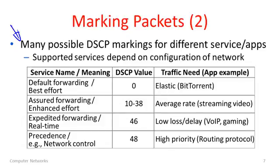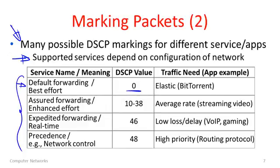In the differentiated services architecture, there are many possible DSCP markings that could be put on a packet to request a different kind of service. It really depends on what the network operator is going to provide. Differentiated services is really a toolkit, and your ISP will decide what handful of services they'll support and exactly what they will mean. One kind of differentiated service has a code point of zero — that's the default forwarding service, which is simply best effort. This is appropriate for elastic traffic, traffic that can be spread out over whatever time is available. BitTorrent is a good example — it's a bulk download that goes as fast as the network has spare capacity.